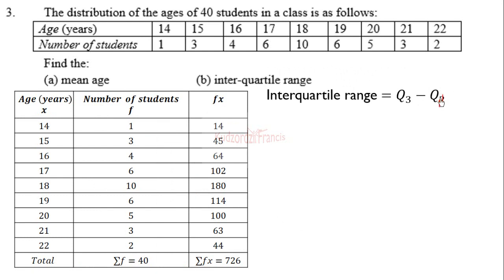It's the third quartile minus the first quartile, Q3 - Q1. For Q3, we need to find the age that corresponds to three-quarters of the total frequency, and for Q1, the age that corresponds to one-quarter of the frequency, then we subtract them.